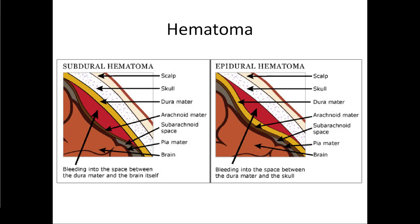One common problem is a hematoma, which means a bleed somewhere in or around the meninges. We can have an epidural hematoma, meaning the blood is leaking on top of the dura, or a subdural hematoma, meaning it's bleeding into the arachnoid mater under the dura mater. When it's below the dura mater, it's much closer to the brain and a lot more dangerous.